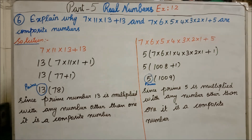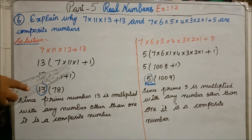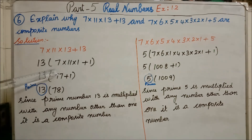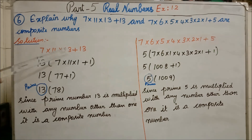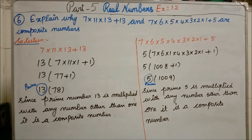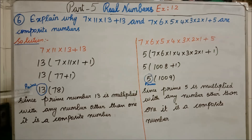Take 13 as common factor outside. After factoring out 13, we write 13 × (7 × 11 × 1 + 1). Multiplying inside: 7 × 11 = 77, and 77 × 1 = 77. So we have 13 × (77 + 1) = 13 × 78. Since 13 is a prime number multiplied by 78 — a number other than 1 — the result is a composite number.